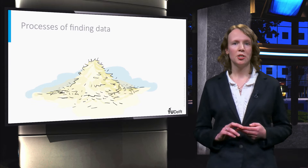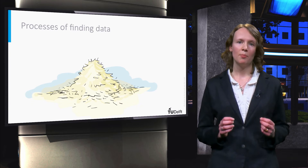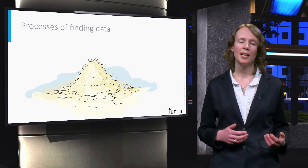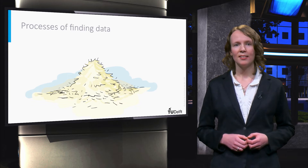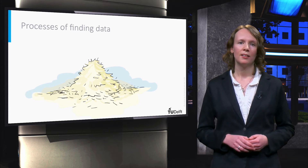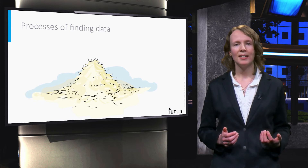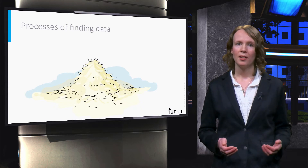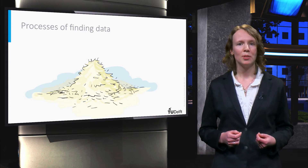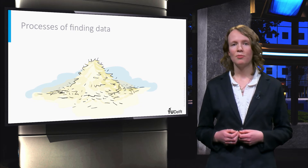Third, potential data users can find this data by searching open data portals. This can be done manually; however, nowadays this is also often done automatically by machines. For instance, application programming interfaces or APIs can be used for this purpose. Since open government data is provided through a large variety of portals, finding the data that someone is looking for can be challenging, especially if he or she does not know whether the data exists and which government organization creates or collects the data. Then users may be looking for the needle in the haystack.